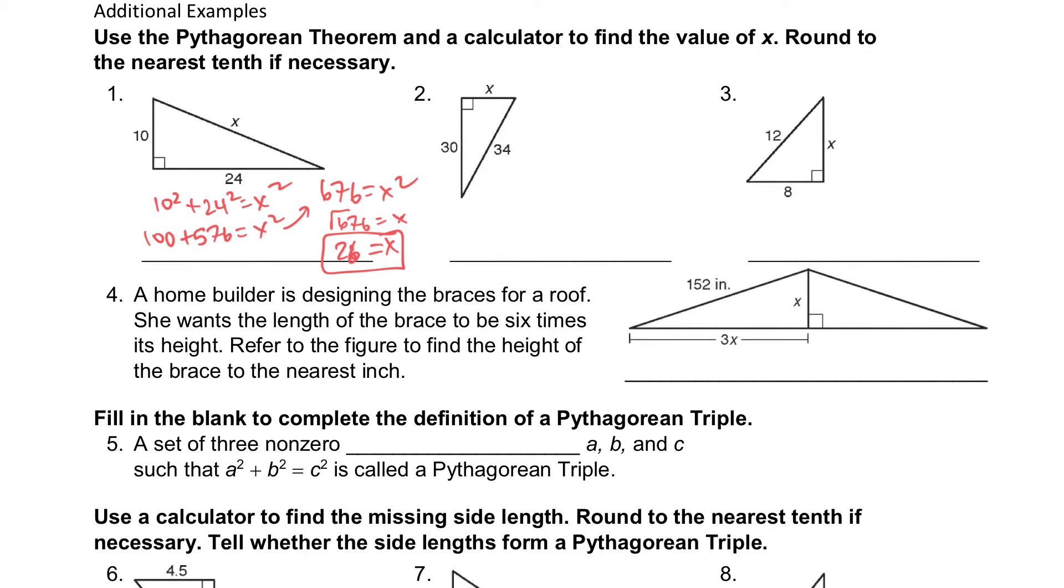For the next problem, we've got x squared plus 30 squared equals 34 squared. So x squared plus, I'm going to square the 30, I'll get 900. I'm going to square the 34, and I will get 1156 minus that 900 gives me 256, so x squared is 256. So taking the square root of 256, I will get an answer of x equals 16.